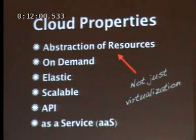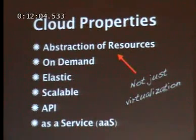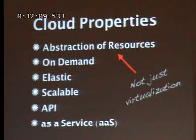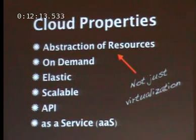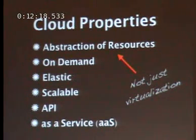The next property is on-demand. It's not a cloud if you have to call somebody up and they say, 'we'll provision that for you on Wednesday.' You've got to be able to do it without interfacing with a human — really that means with some kind of payment instrument like a credit card, where you can just do it.